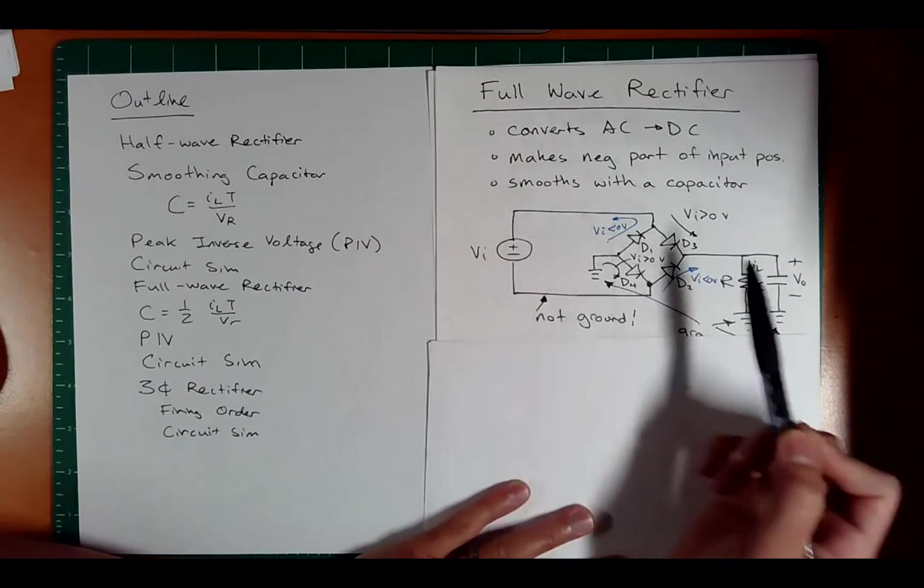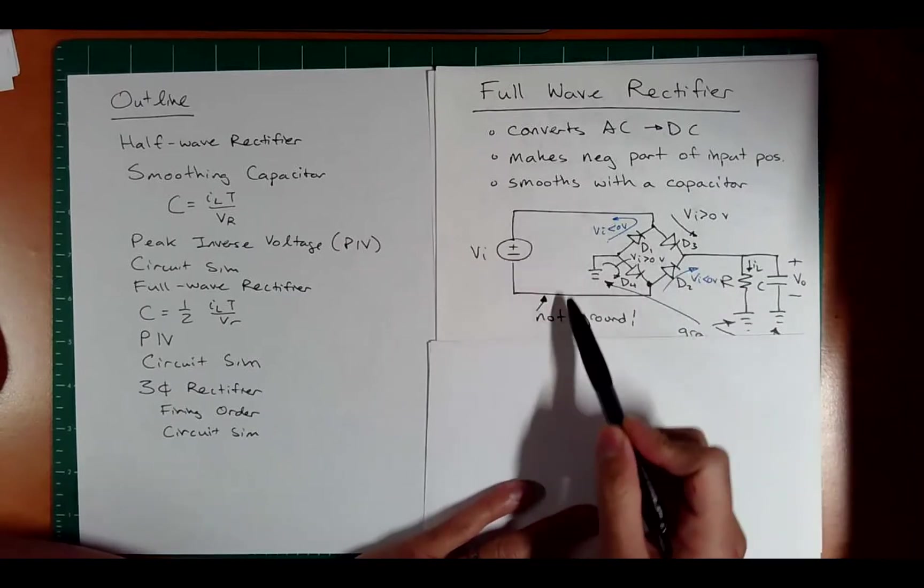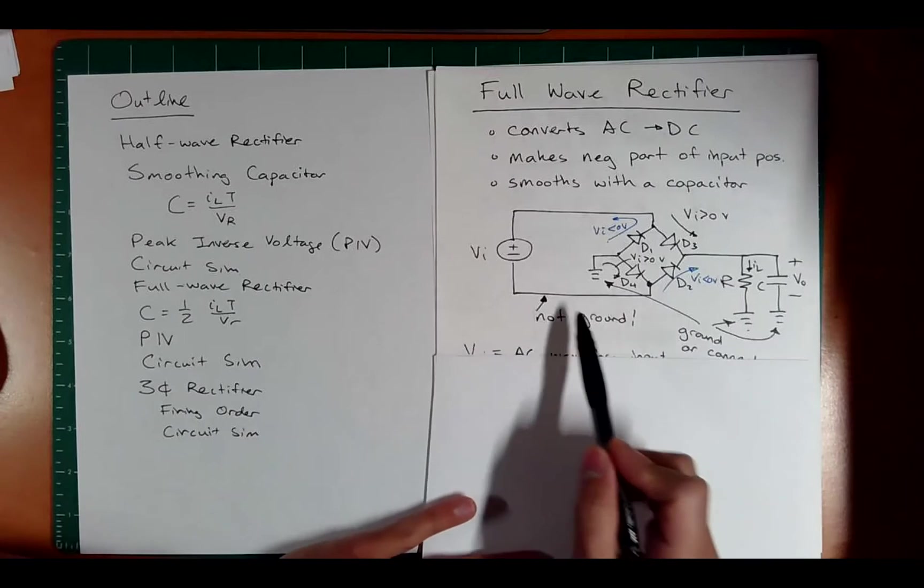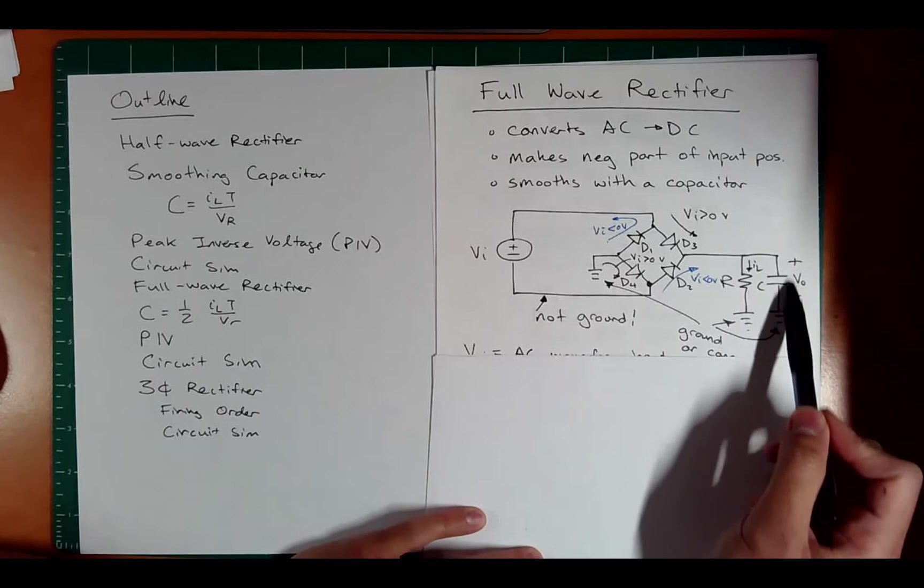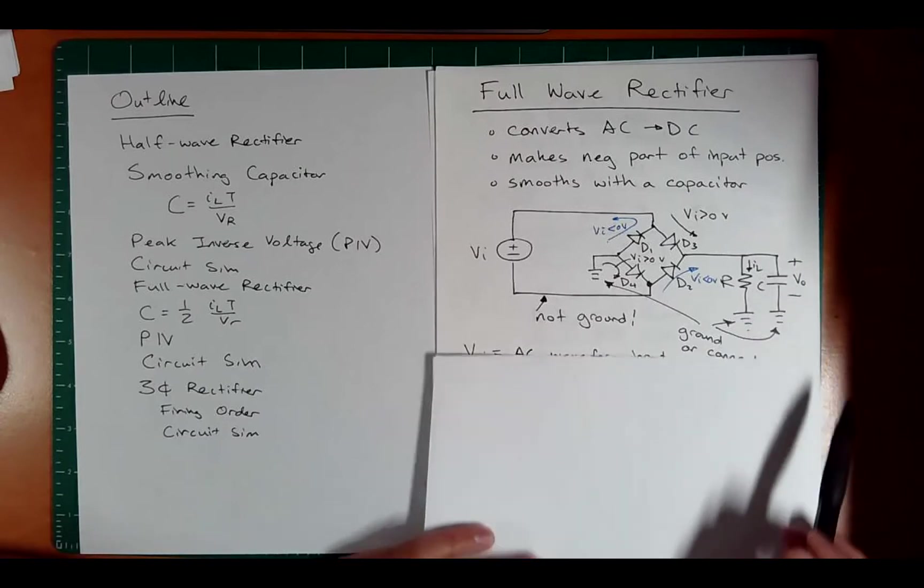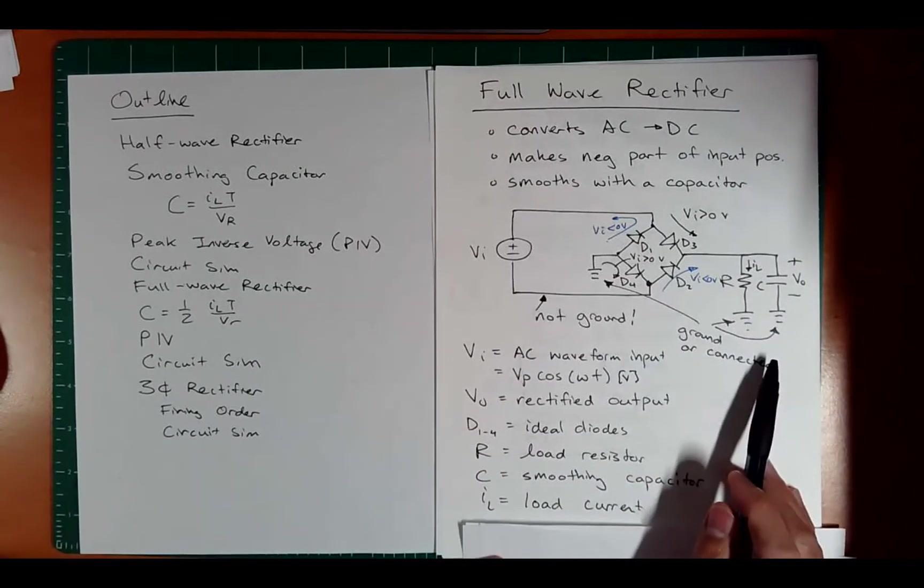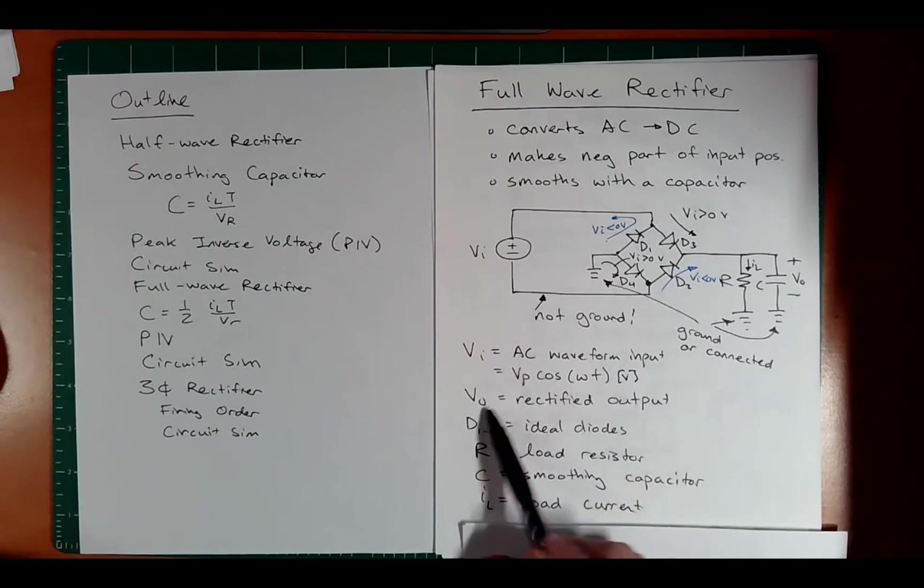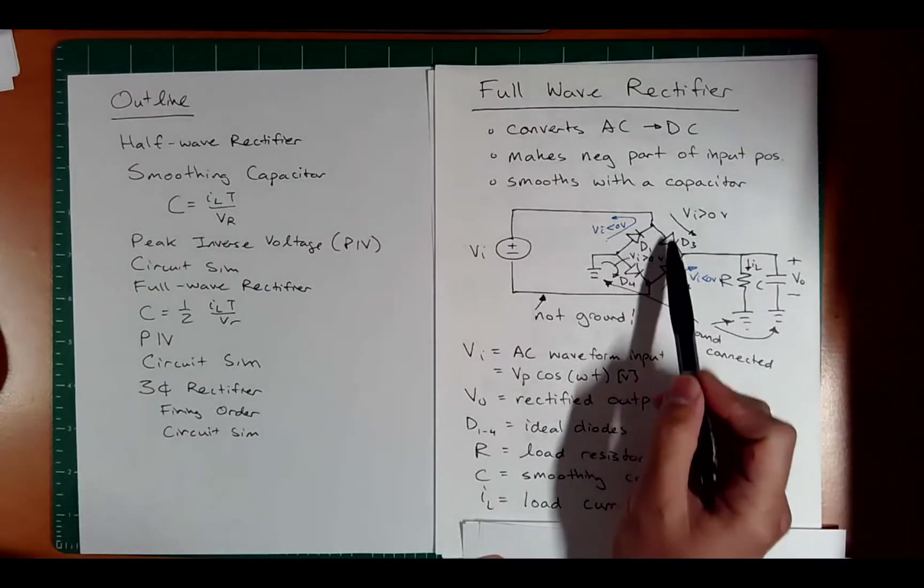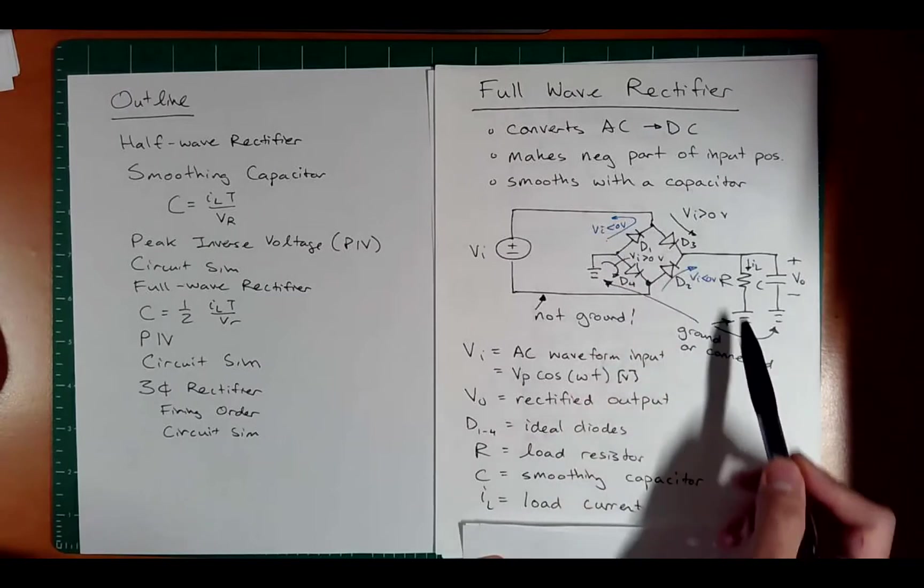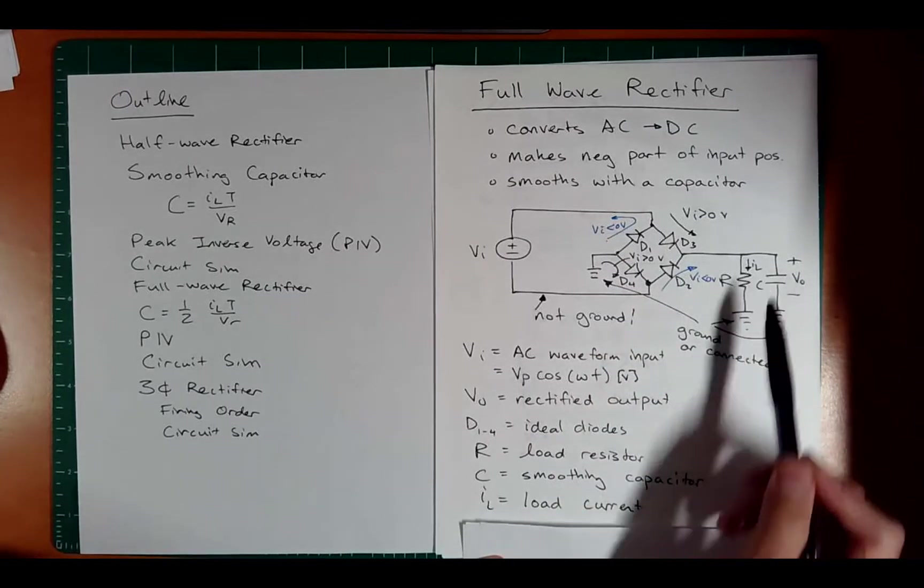We have our input voltage, which is AC, and notice we have a ground here, but this is not ground. We have a resistor, load resistor, and we have our smoothing capacitor. So these are all the terms defined, input voltage, AC, rectified output. We'll assume that for this analysis that these are ideal diodes, and these are the rest of the terms here.